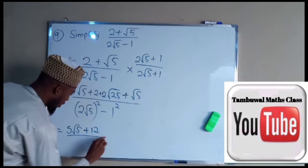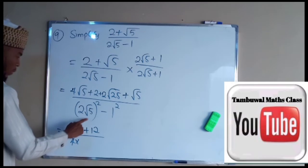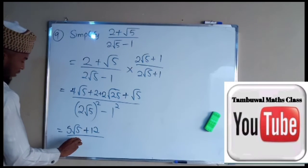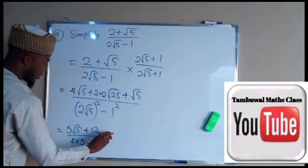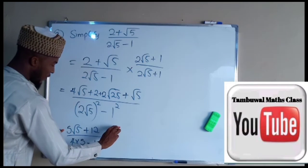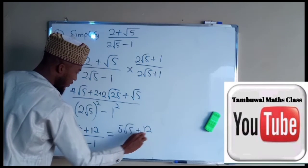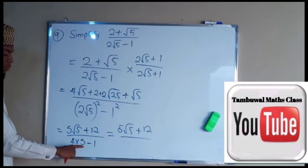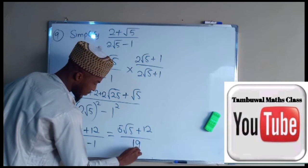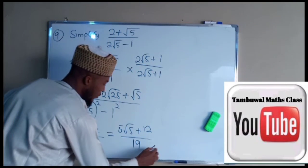All divided by 2 squared is 4 times root 5 squared is 5 minus 1. And this is 5 root 5 plus 12 divided by 20 minus 1 which is 19. We end up having this as our solution.